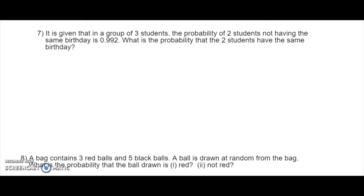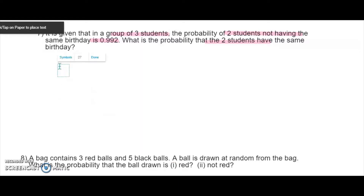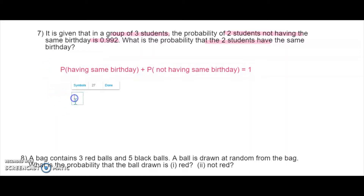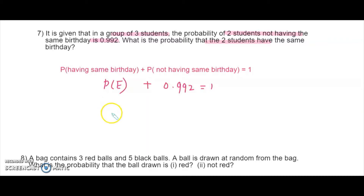Next, there are three students in a group. Two students have the probability of not having the same birthday as 0.992. What is the probability that these two students will have the same birthday? The probability of having the same birthday plus the probability of not having the same birthday equals 1. Not having the same birthday is 0.992, so having the same birthday equals 1 minus 0.992, which is 0.008.